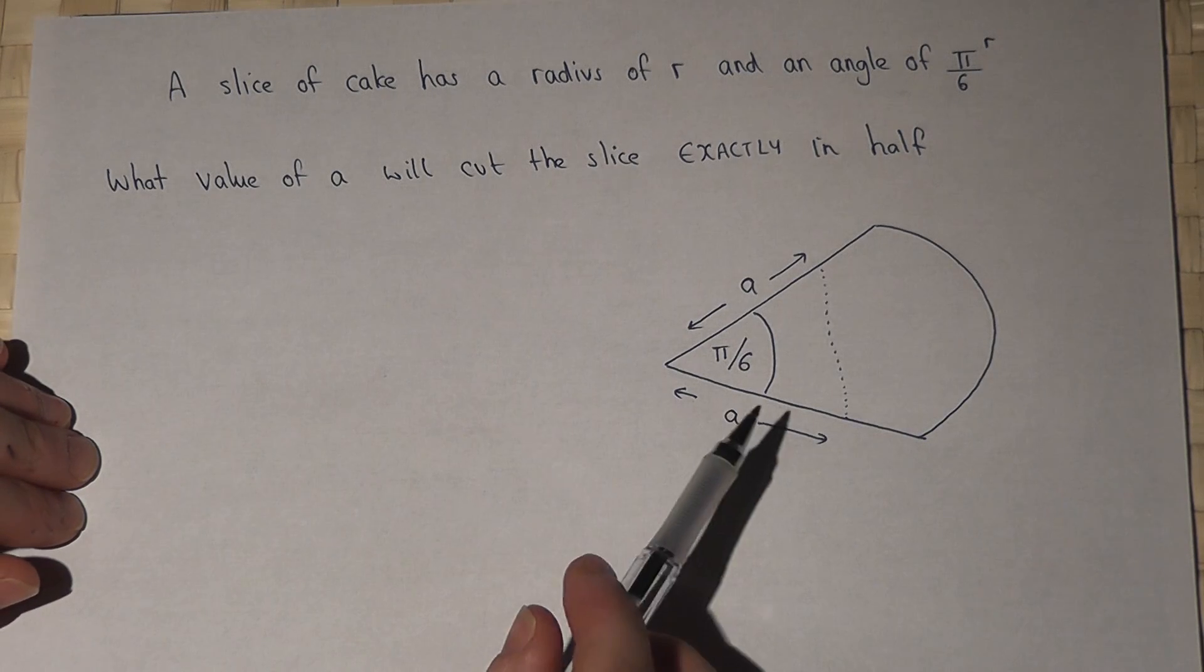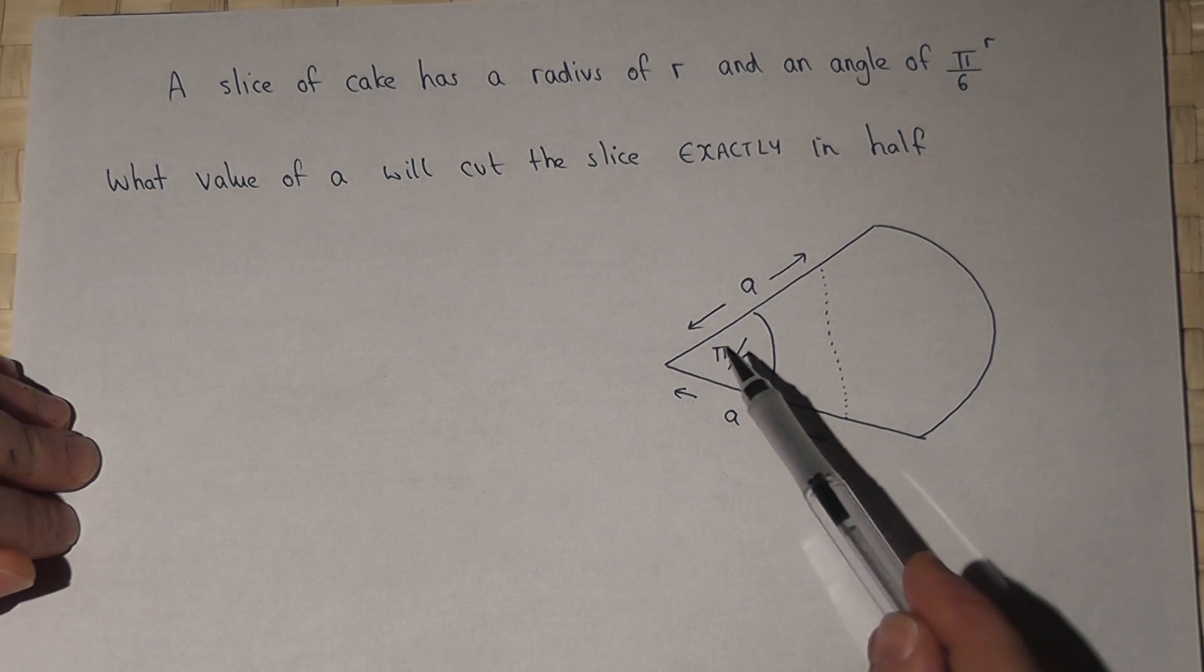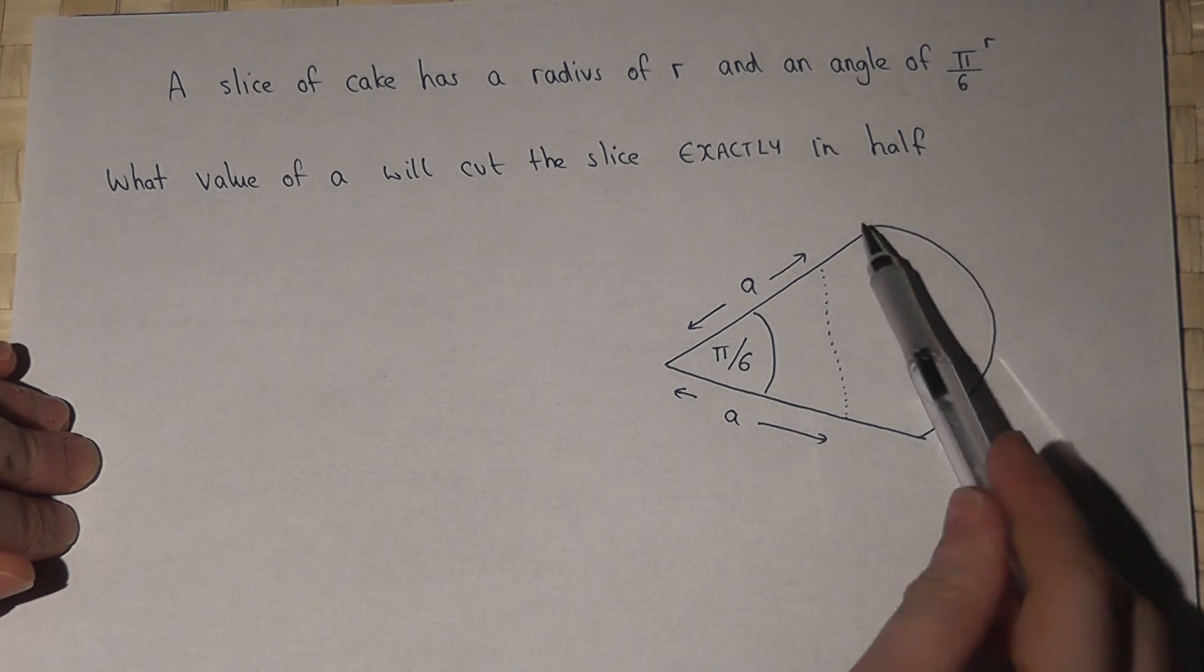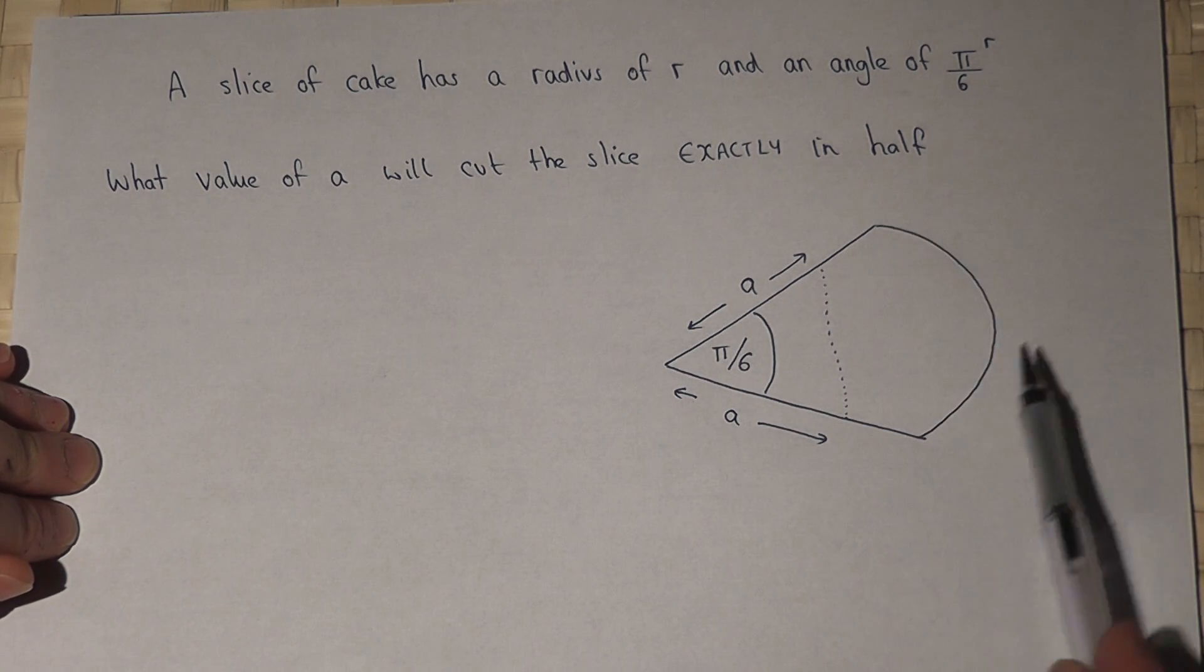This question poses a nice little problem. We've got a slice of cake which is in the shape of a sector and rather than cut the cake in half that way, the question is what value of A if you cut down ensures that those two halves are of equal area.